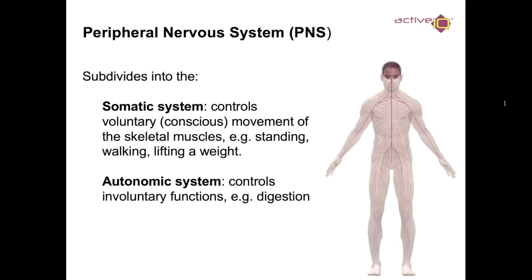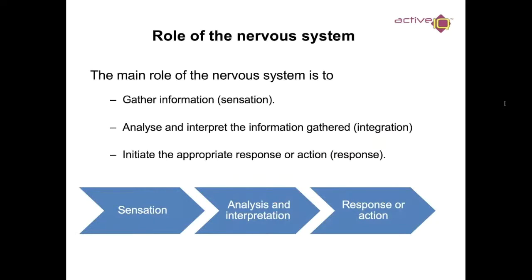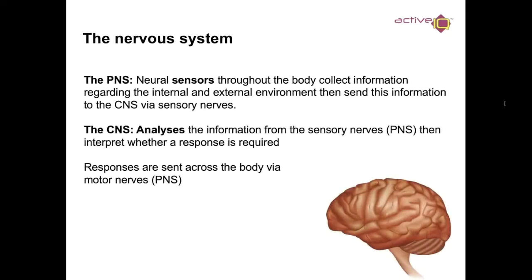The autonomic system governs everything internally, such as hormones. The main role of the nervous system is to gather information and sensation, analyze and interpret it, then initiate the appropriate response. Neural sensors throughout the body collect information about the internal and external environment and send it to the central nervous system via sensory nerves. The CNS then interprets the information and sends responses across the body by motor nerves.